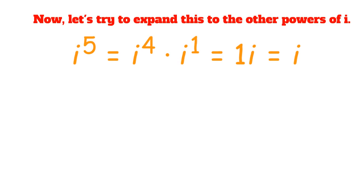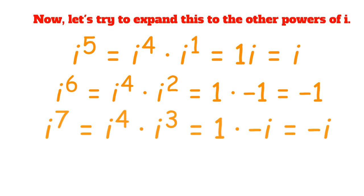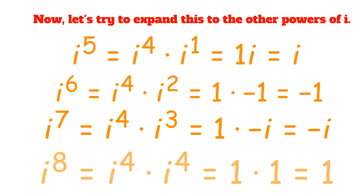Now let's try to expand this to the other powers of i. i to the power of 5 is equal to i to the power of 4 times i to the power of 1. We know that i to the power of 4 is just equal to 1 and i to the power of 1 is just equal to i, so our answer is i. Similarly, i to the power of 6 is equal to i to the power of 4 times i squared, which is equal to negative 1. And i to the power of 7 is equal to i to the power of 4 times i to the power of 3, which is 1 times negative i, or negative i. And i to the 8th is equal to i to the power of 4 times i to the power of 4, which is 1 times 1, so i to the power of 8 is equal to 1.